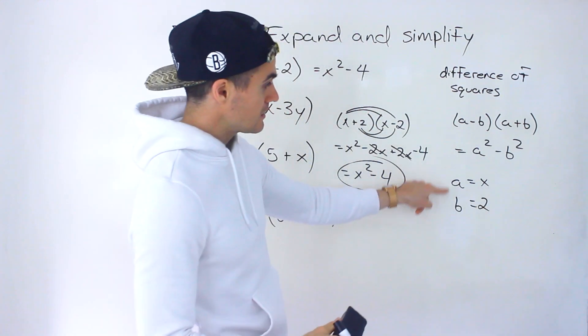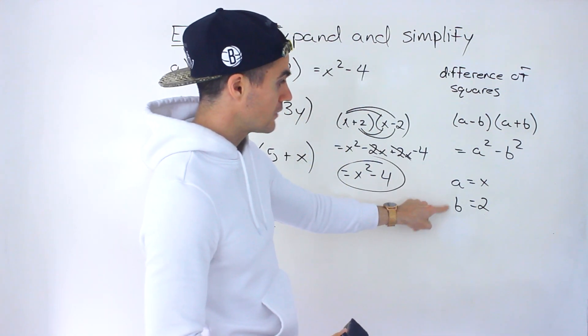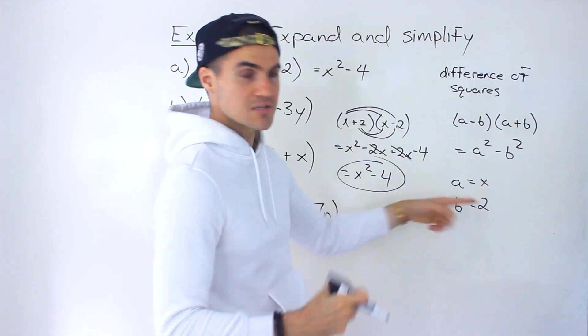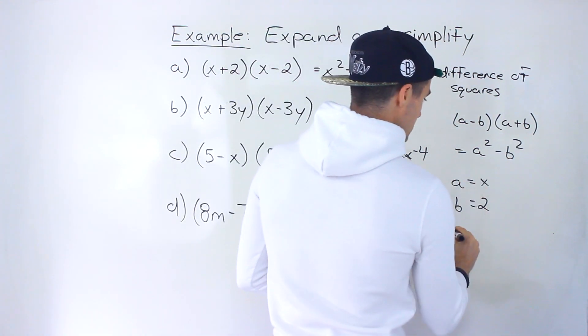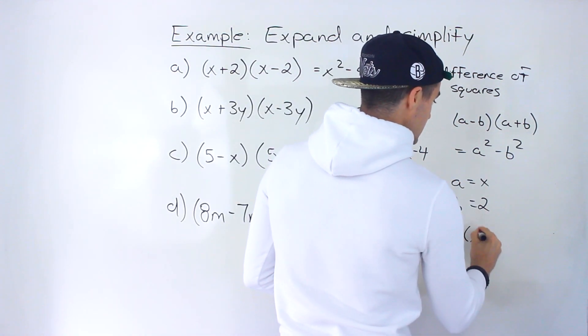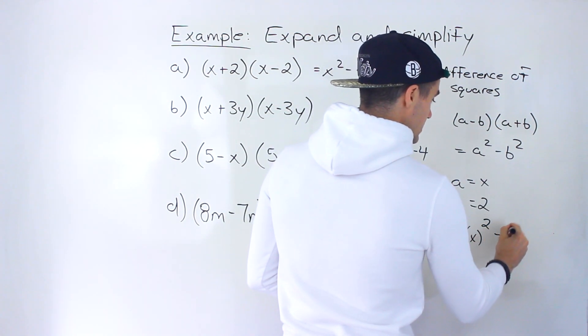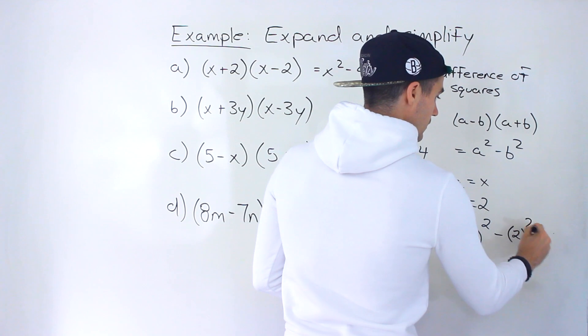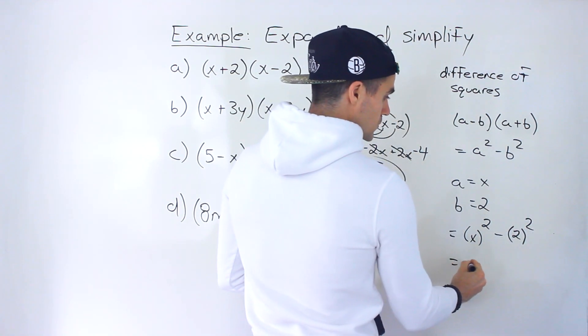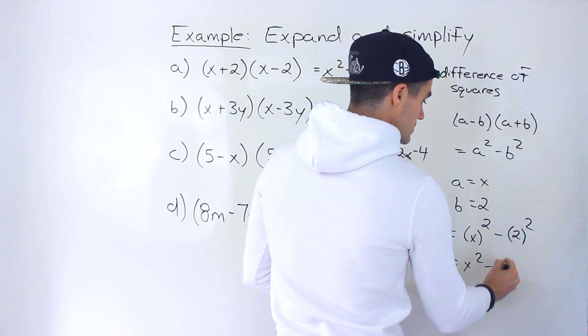So if we take both of these values for a and b, the x and the 2 respectively, and we plug it into this formula, we'd end up with x, the a value to the power of 2 minus the b value, which is 2 to the power of 2, which would give us x squared minus 4.